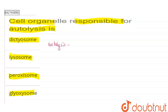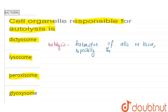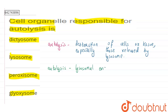Autolysis basically means the destruction of cells or tissue, especially those released by lysosomes. In autolysis, there is the release of lysosomal enzymes, and these lysosomal enzymes help in the destruction of certain tissues or cells.